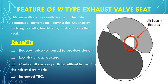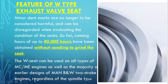There are four key points: First, reduced price compared to the previous design, because the W design requires less material than a complete continuous seat. Second, less risk of gas leakage because the seating surface is now a three-point contact that crushes all carbon particles. Third, no increased risk of dent marks. Fourth, increased time between overhauls.